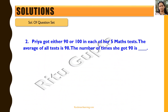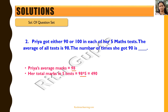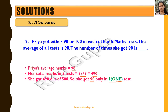The second question says Priya got either 90 or 100 in each of her five maths tests, and the average of all the tests is 98. We need to find out how many times she got a 90. Since the average is 98 over five tests, the total marks is 98 multiplied by 5, which is 490. Since she got 490 in total, she got 90 only once.